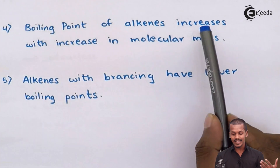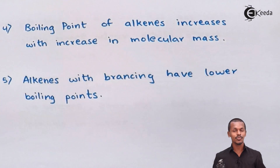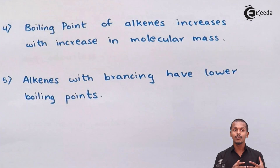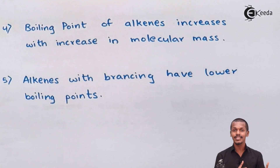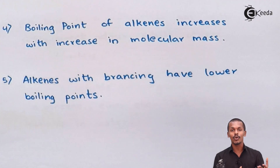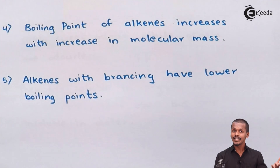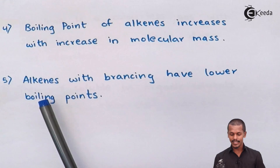The boiling point of alkenes increases with increase in molecular mass. As the molecular mass increases, more energy is required to boil that particular alkene. So as the number of carbons increases, the boiling point of the alkene also increases.